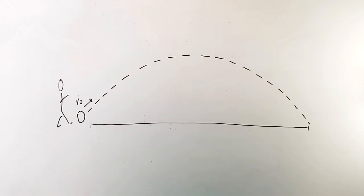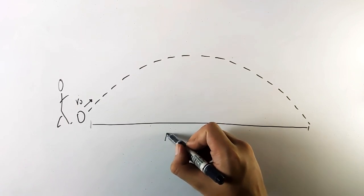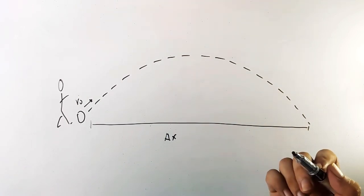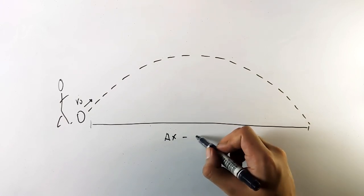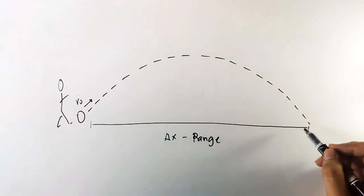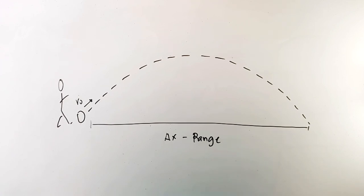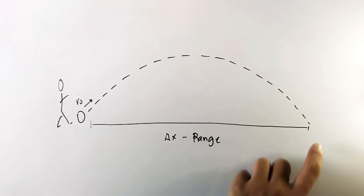Based on the previous topics that we have, this is of course delta x, which is the horizontal displacement. For projectile motion we call it the range. This is the length of path that the projectile took, starting from the place where it started to the place where it will fall.